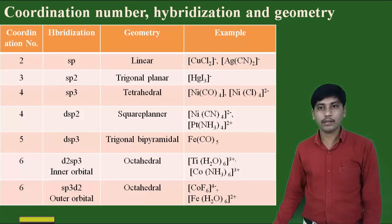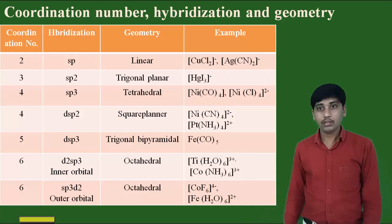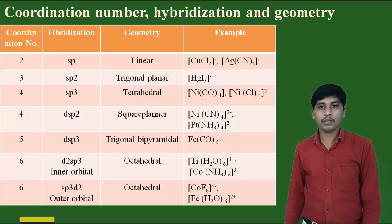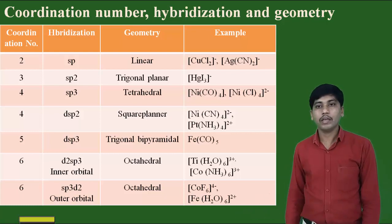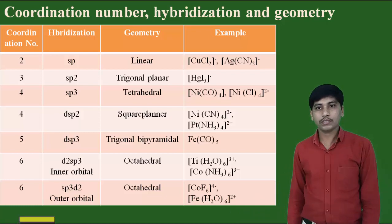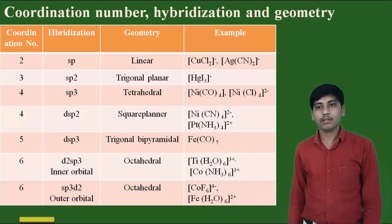For coordination number 6: d2sp3 hybridization gives octahedral geometry — examples [Ti(H2O)6]³⁺ and [Co(NH3)6]³⁺ (inner orbital complexes). sp3d2 hybridization also gives octahedral geometry — examples [CoF6]³⁻ and [Fe(H2O)6]²⁺ (outer orbital complexes).